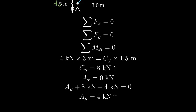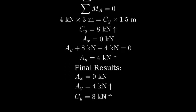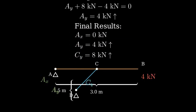Let's summarize our results. We found that the horizontal reaction at A is zero. The vertical reaction at A is four kilonewtons upward. The reaction at C is eight kilonewtons upward. These reactions keep our beam system in perfect equilibrium.